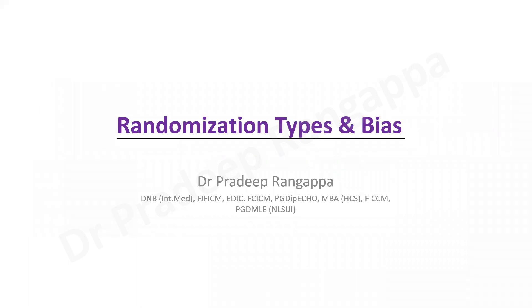Hello friends. Today I'll be talking briefly on randomization types and bias. This was covered during one of the sessions we did for trainees, where we gave the critical appraisal of an article. Generally, in IFCCM exams, DNB exams, or even some western exams, we give trainees a journal article and ask them to critically appraise it. It is expected that trainees know certain nuances of statistical tools or methodologies that are adopted.